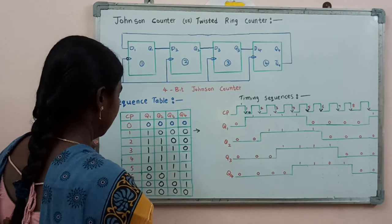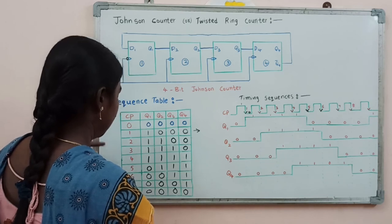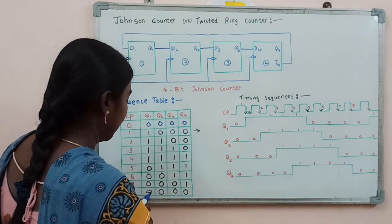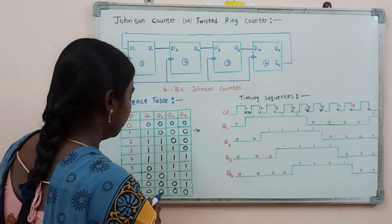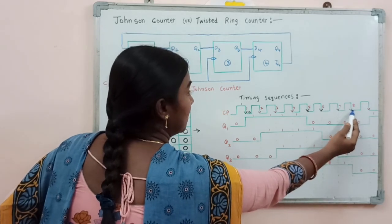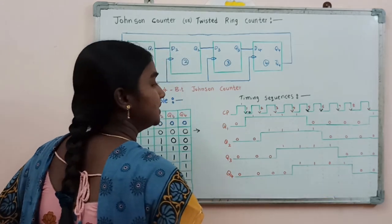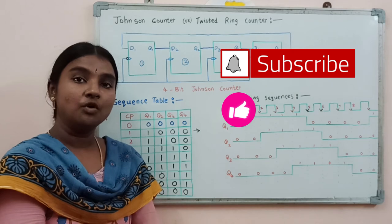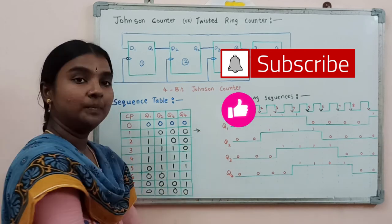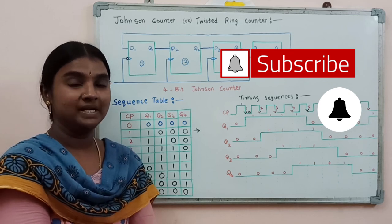In a similar manner, we may get other sequences by applying the sixth and seventh clock pulses. When we apply the eighth clock pulse, the sequence we get is Q1 equal to 0, Q2 is 0, Q3 is 0, and Q4 is also 0. So for this 4-bit Johnson counter, for every eighth clock pulse, these sequences are going to be repeated. This is the working operation of this 4-bit Johnson counter.